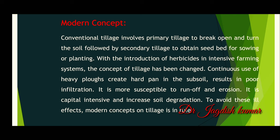Now come to the modern concept of tillage. Conventional tillage involves primary tillage to break, open, and turn the soil, followed by secondary tillage to obtain seed beds for sowing or planting. The introduction of herbicides and extensive farming systems has changed the concept of tillage. Continuous use of heavy plows creates hardpan in the subsoil, resulting in poor infiltration, more susceptibility to runoff and erosion, capital intensity, and increased soil degradation. To avoid these effects, the modern concept of tillage has been introduced.